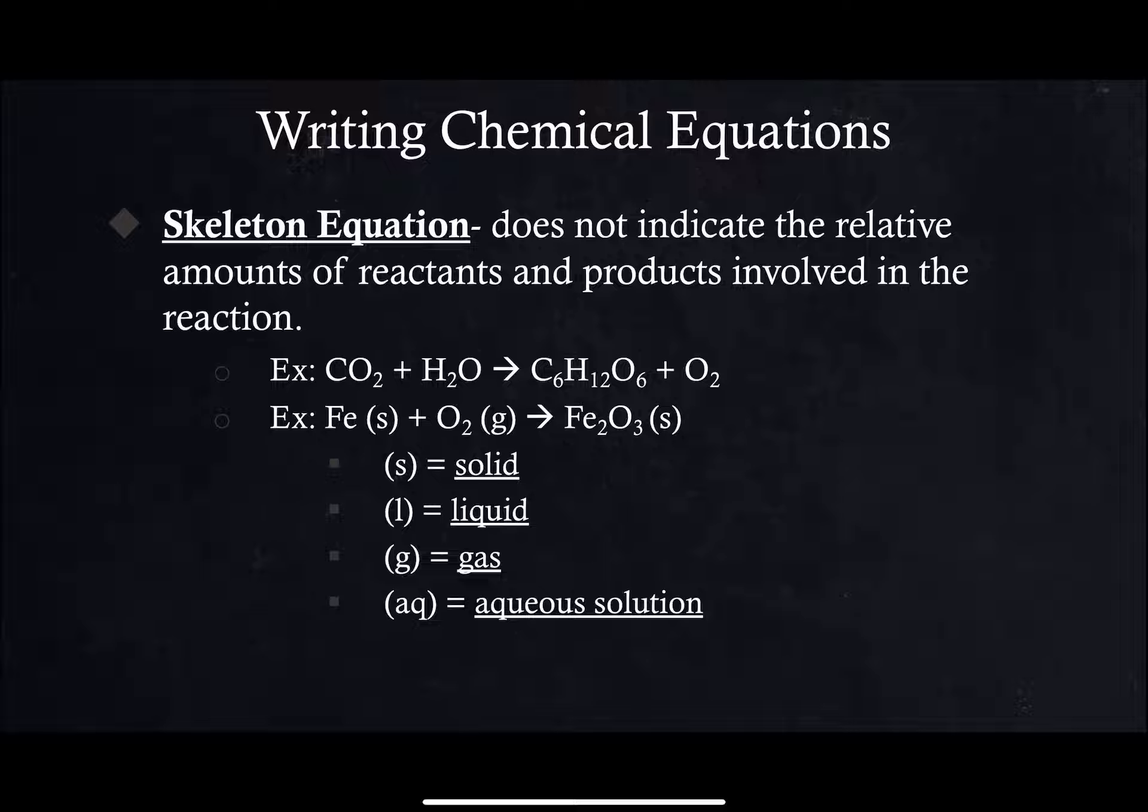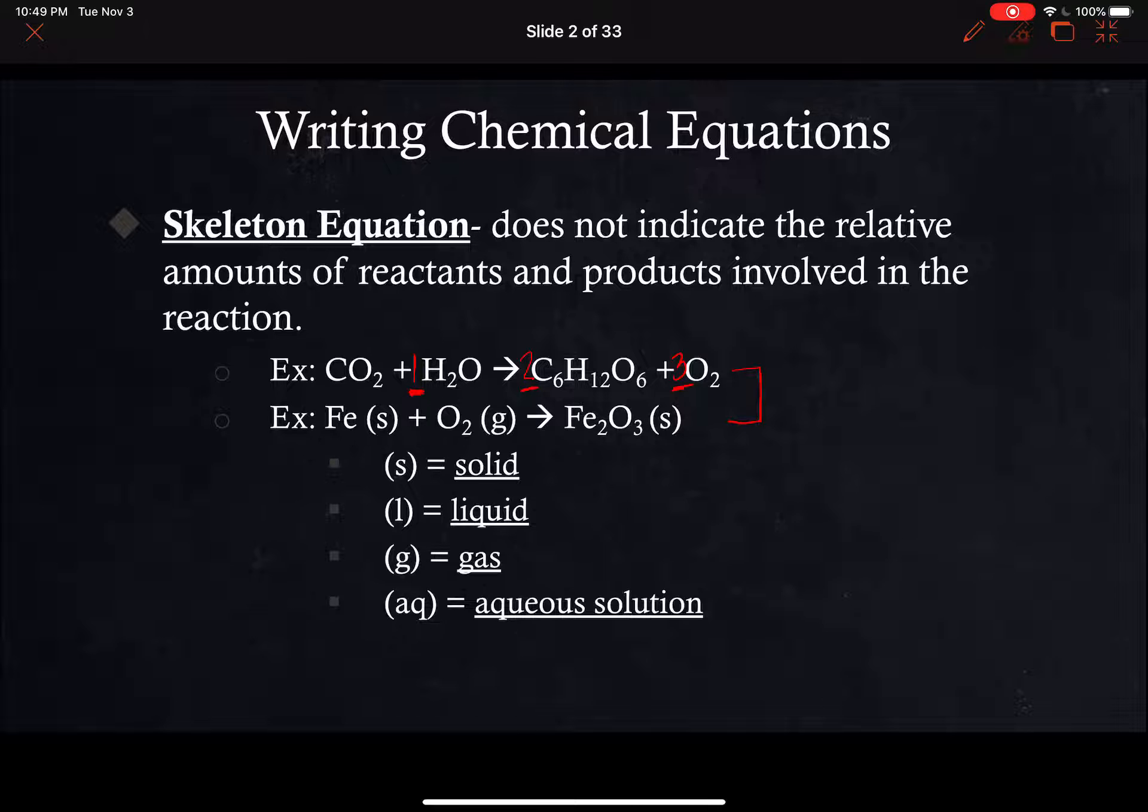When we write chemical equations, sometimes you will see what's referred to as a skeleton equation. These two examples shown here are both skeleton equations. You'll notice that they don't have any numbers here. A skeleton equation doesn't have any numbers, it doesn't indicate the amounts of reactants in product.